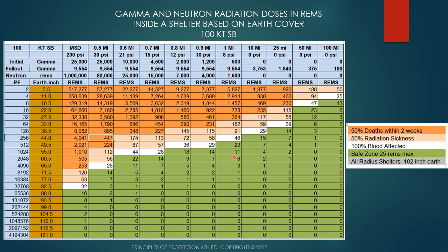Remember, that's not the total dose inside the shelter. You've got radiation that can come in through the entranceway. I've seen shelters with great overhead shielding but two large walk-in entranceways that put the total over 25 rems. You want the total radiation from the entranceways and air ducts combined to not exceed 25 rems — I usually like to keep it under 10. In this table, what's shown in green is acceptable; radiation sickness occurs in the tan areas; and death within two weeks occurs in the orange areas. It's a very useful table in the POP book.